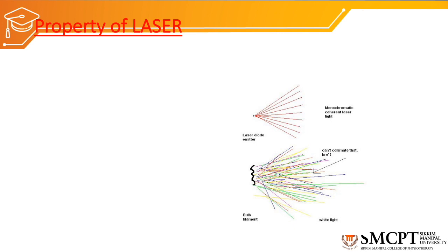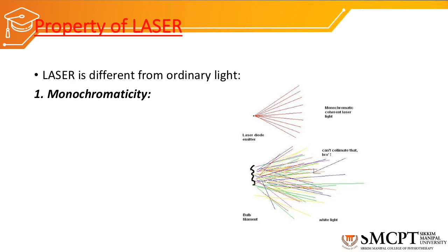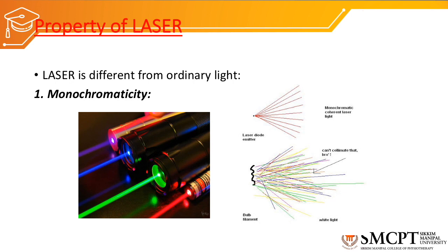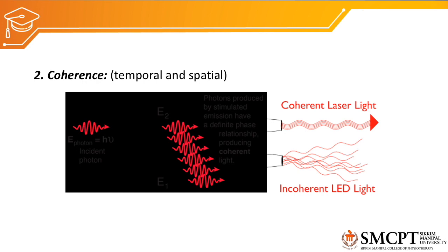Laser has three unique properties compared to ordinary light. The first property is monochromaticity, which means only one single wavelength. Every beam of light coming from a laser device has only one wavelength. For example, if the laser beam emits red light, it has a wavelength of 694.3 nanometers, also called a ruby laser.